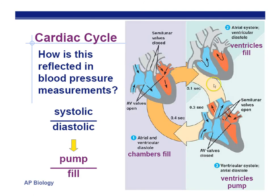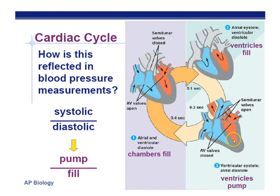During atrial and ventricular diastole, the chambers are filling up with blood — the AV valves are open but not the semilunar, so no blood leaves the heart at this point. Then during the atrial stroke, just the atria contract and squeeze blood into the ventricles. Then during the second part of the heartbeat, the ventricles contract — a big push that pushes blood through the semilunar valves and into the arteries, either to the lungs on the right side or the rest of the body on the left side.